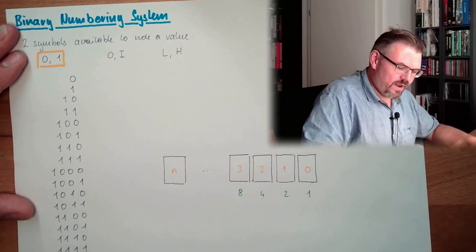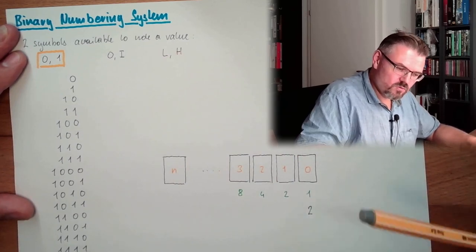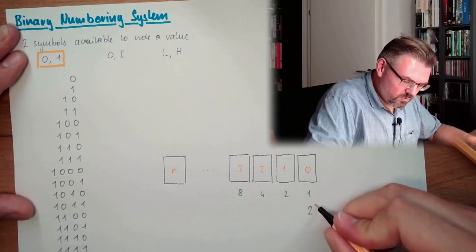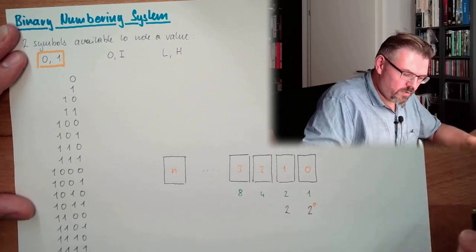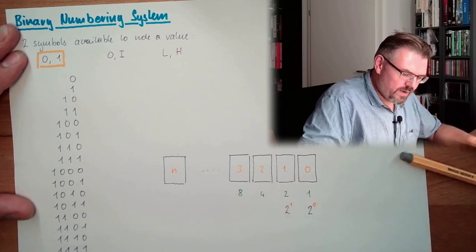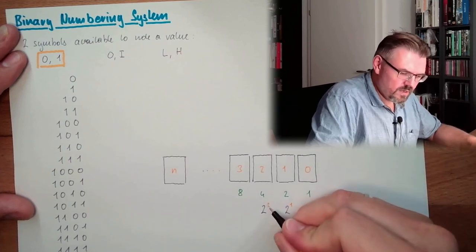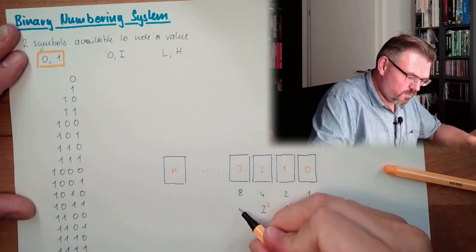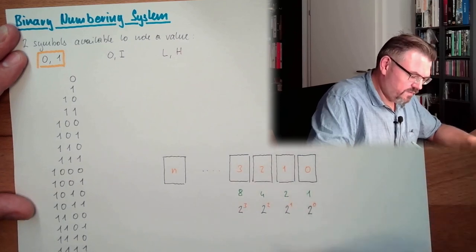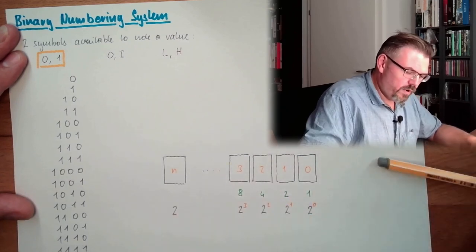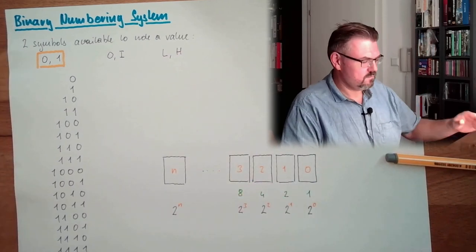So we are ending up here in 2, not 10, raised by the power of 0. And here we're ending up in 2 raised by the power of 1. Here we're ending up in 2 raised by the power of 2. Here we're ending up in 2 raised by the power of 3, and so on. So the value of this one is 2 raised by the power of n.